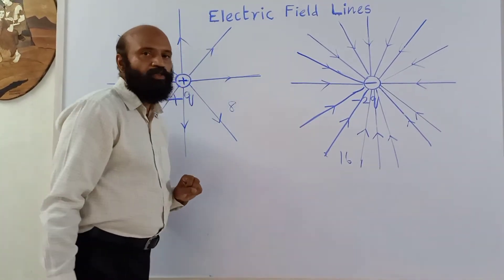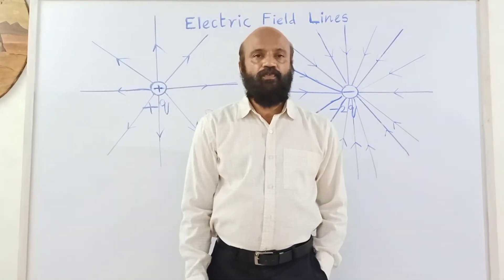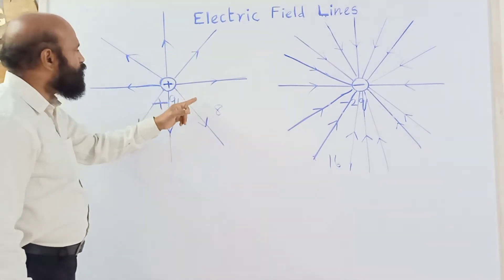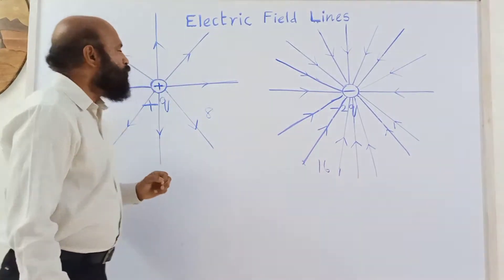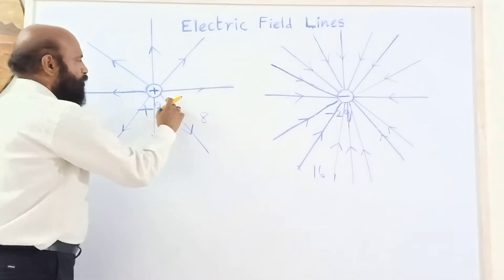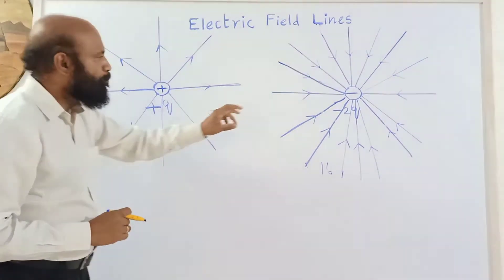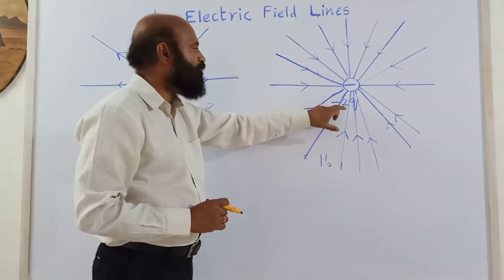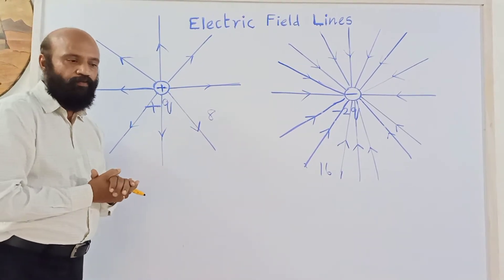When the magnitude of the charge is more, the electric field surrounding that charge is also more. Here charge is Q so the surrounding electric field is less compared to the 2Q charge. Field lines are not as crowded for Q, so the gap between lines is more — field is less. But for 2Q, field is more, lines are crowded. So electric field can be represented by electric field lines.